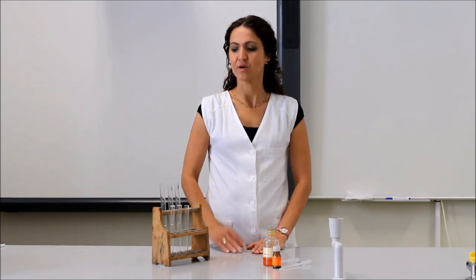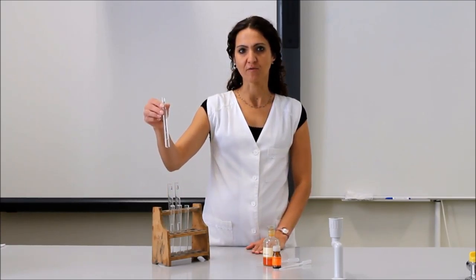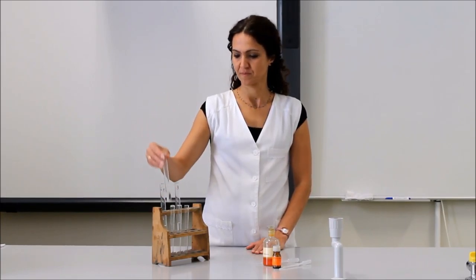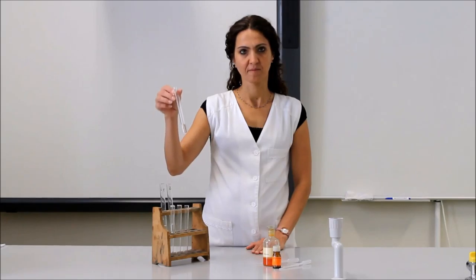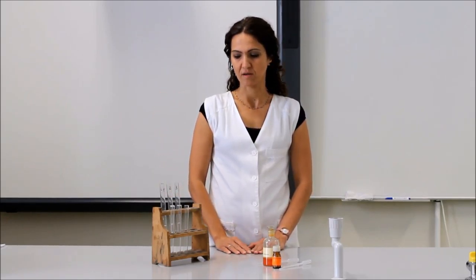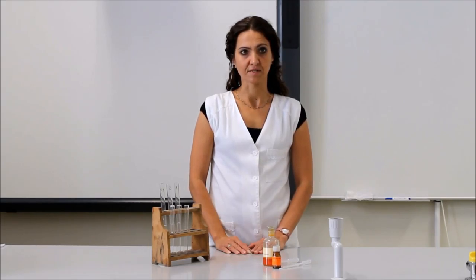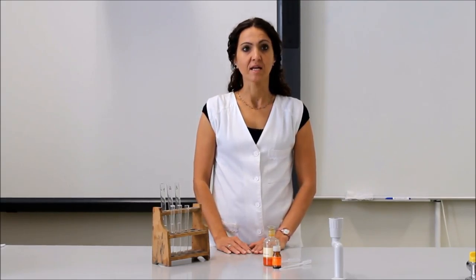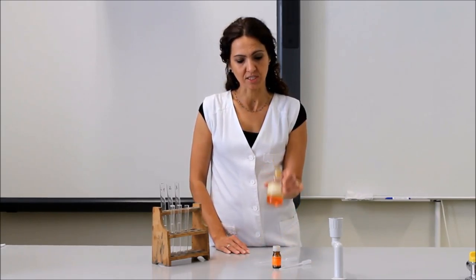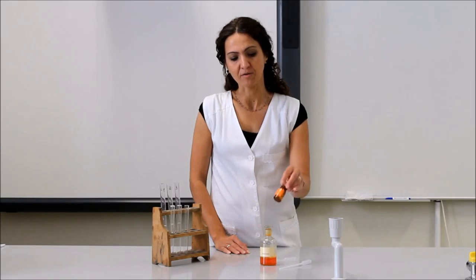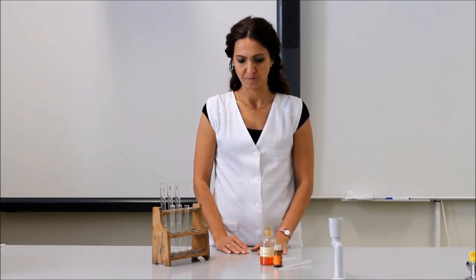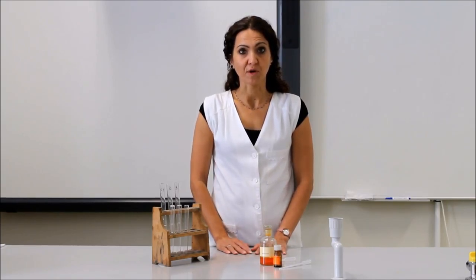Feladatunk, hogy a három sor számozott kémcsőben színtelen folyadékok vannak. Ezeket kell azonosítanunk. A három anyag nátrium-hidroxid oldat, hidrogén-klorid oldat és desztillált víz, nem feltétlenül ebben a sorrendben. Rendelkezésünkre áll két indikátor, a fenolftalein és a metil-narancs, hogy megkülönböztessük egymástól a három színtelen anyagot. Nézzük, milyen módszert fogunk használni.